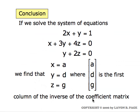This is just a restatement of what I just said. If we solve this system of equations, we find that the solution for x, y, and z is equal to the numbers a, d, and g — which is the first column of the inverse of the coefficient matrix.